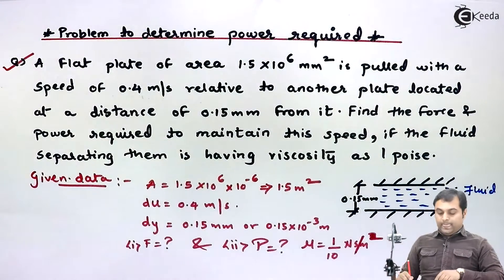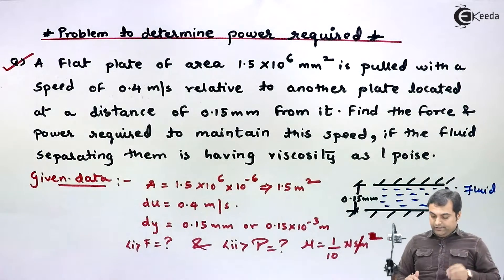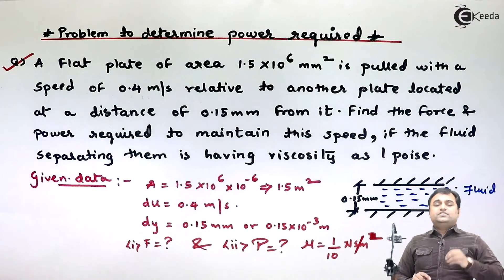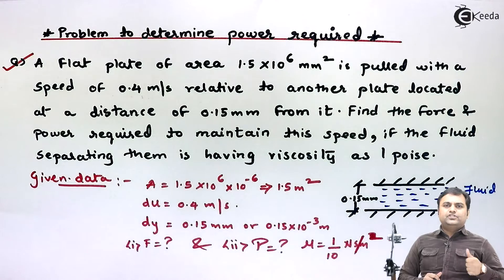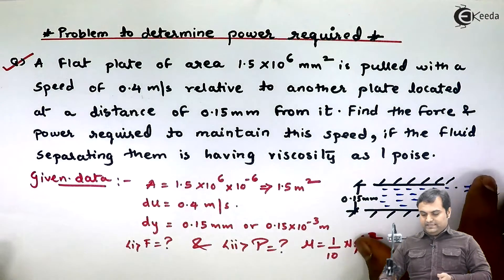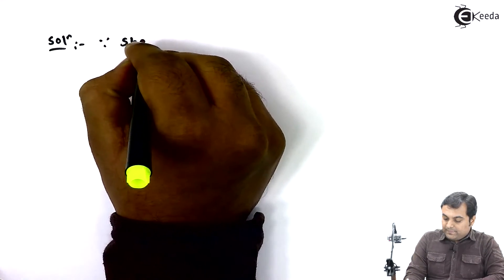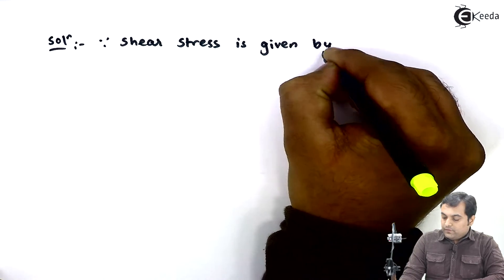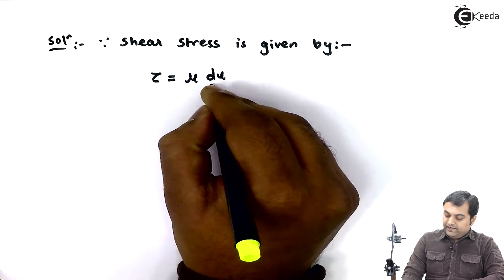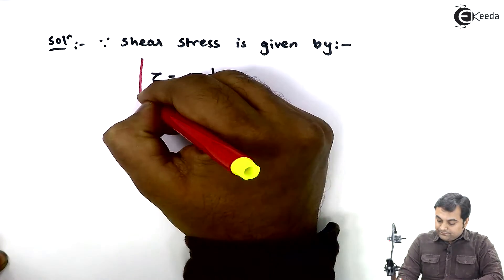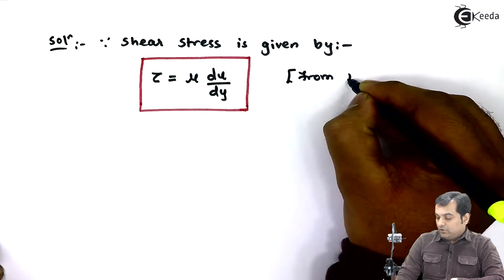We first need to find the shear stress, because shear stress equals force divided by area — since area is known, once we have shear stress we can get force. Starting the solution: shear stress is given by Newton's law of viscosity: τ = μ × (du/dy). We will highlight this relation from Newton's law of viscosity.